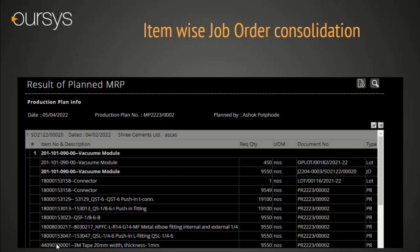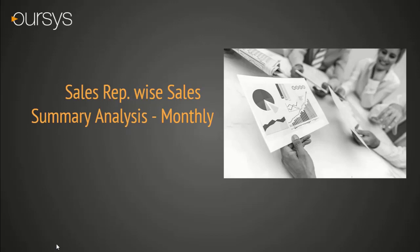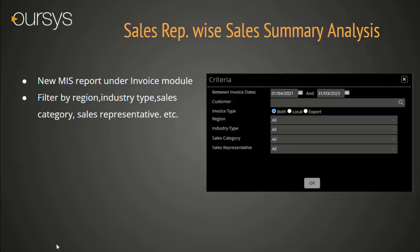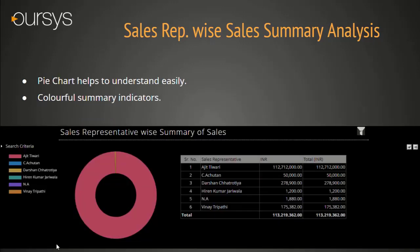Sales Representative-wise Sales Summary Analysis Report. A new MIS report has been introduced under the Invoice tab. Here we have given multiple filter criteria like sales reason, sales category, sales representative, industry type, etc. The user can view local and export dispatched data in a single report. This report provides chart functionality with the salesperson value summary in Indian currency.